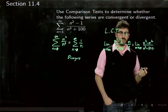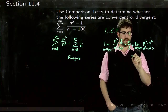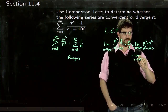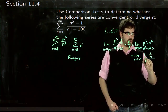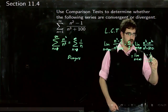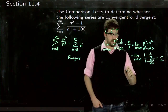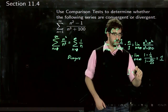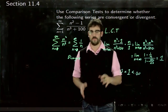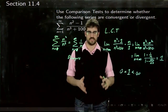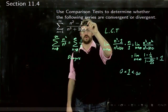You could use L'Hôpital's rule three times, or just divide everything by n³ to get the limit as n goes to infinity of (1 - 1/n) / (1 + 100/n³), which equals 1. Since 1 is neither 0 nor infinity, we can apply the limit comparison test, and because the comparison series diverges, this series must also diverge.